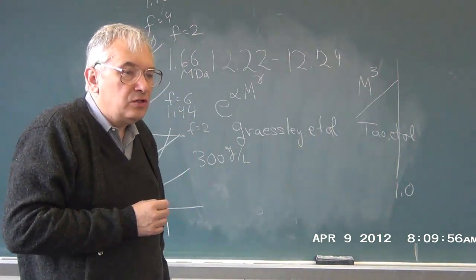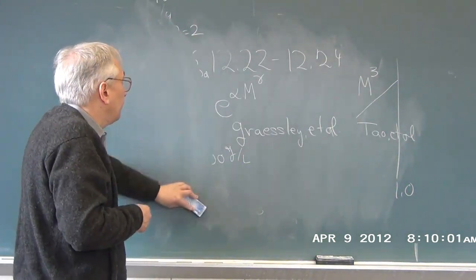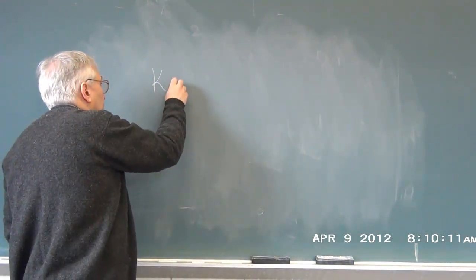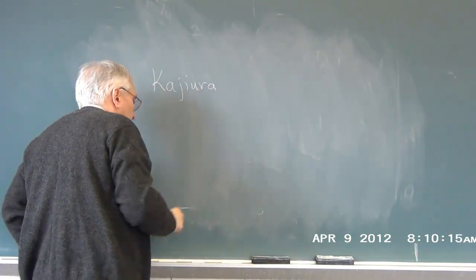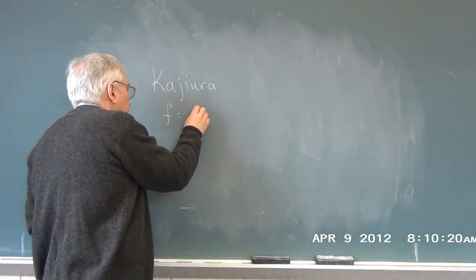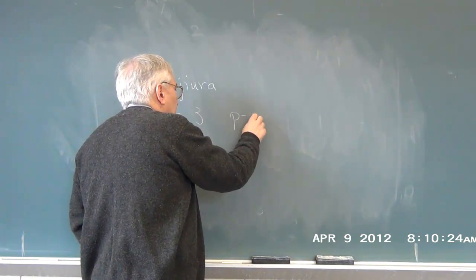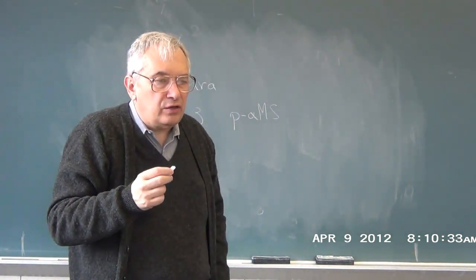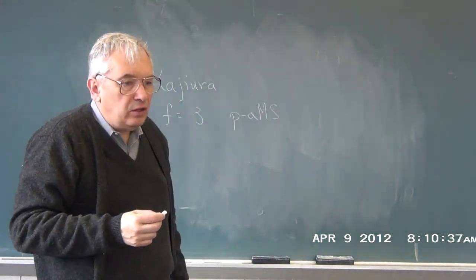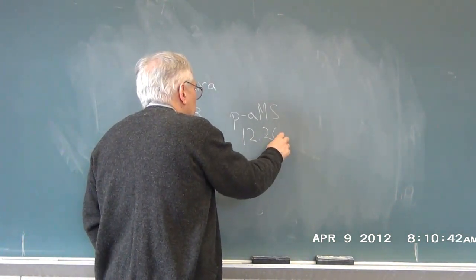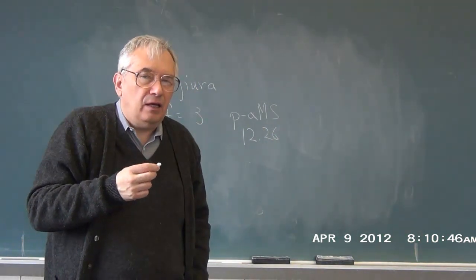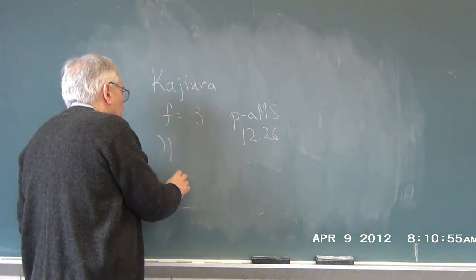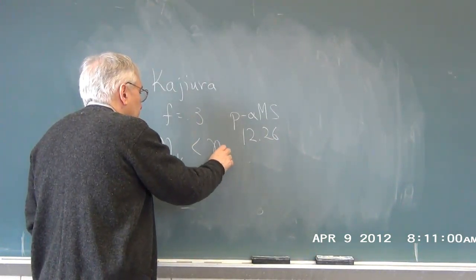You can also look at results of Casura and collaborators. They looked at three-arm stars of poly-alpha-methyl-styrene, examining a series of concentrations and molecular weights—results visible in figure 12.26. What they found was that, again, if you're at about the same concentration and about the same molecular weight, the viscosity of the star polymer (F equal to three) is less than the viscosity of the linear chain.